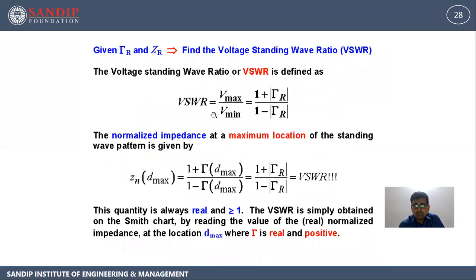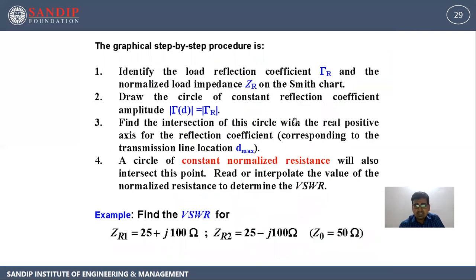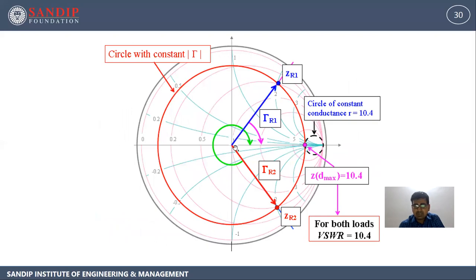How to find VSWR on the Smith chart. VSWR is V_max upon V_min, or (1 plus reflection coefficient) upon (1 minus reflection coefficient). Suppose Z_r is 25 plus j100 and Z_0 is 50; normalized impedance is 0.5 plus j2. Keeping the center at 1, we draw a circle with radius equal to the distance to the normalized impedance point. On the right side, where the circle cuts the real axis, that value is VSWR. In our present case it is 10.4.